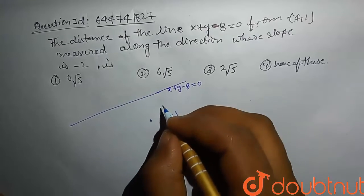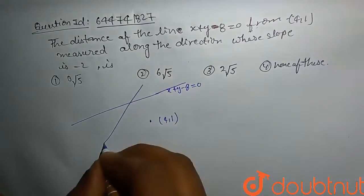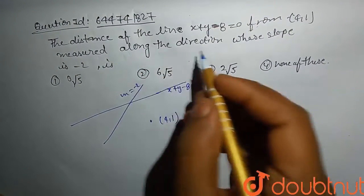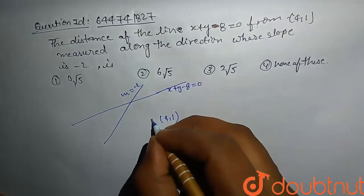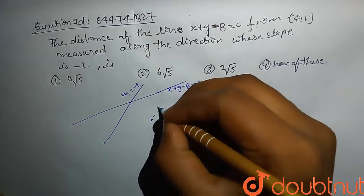This is our line. Here slope is given minus 2. Let's assume this is slope of minus 2. We have to measure from this point along this direction, means along this parallel to this line.